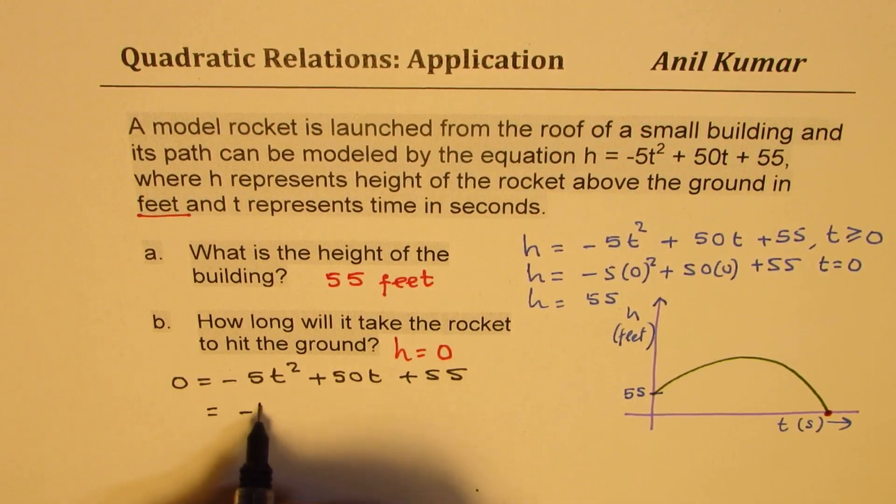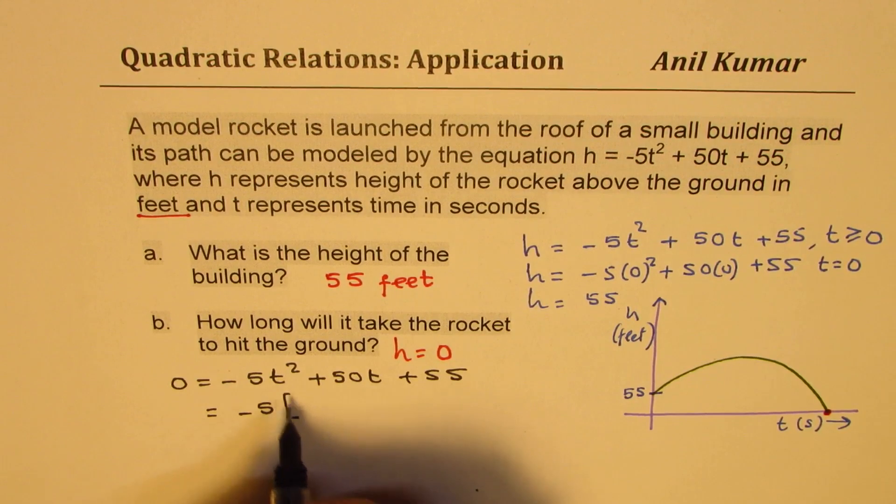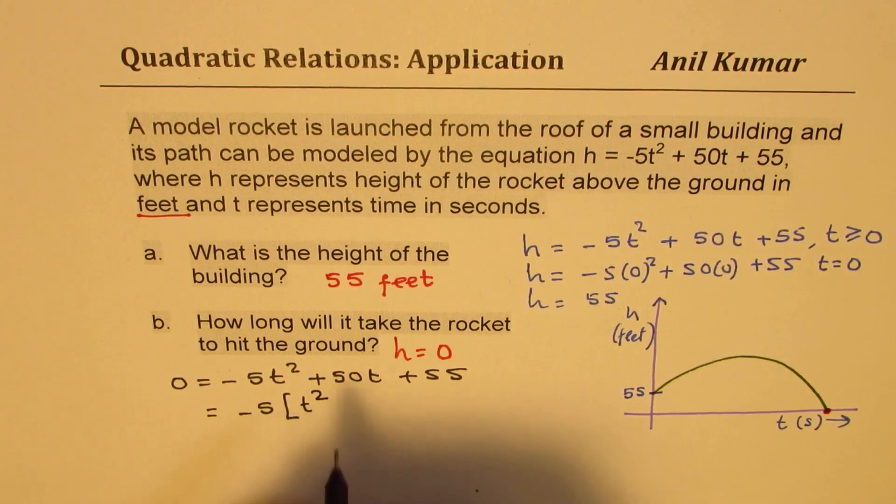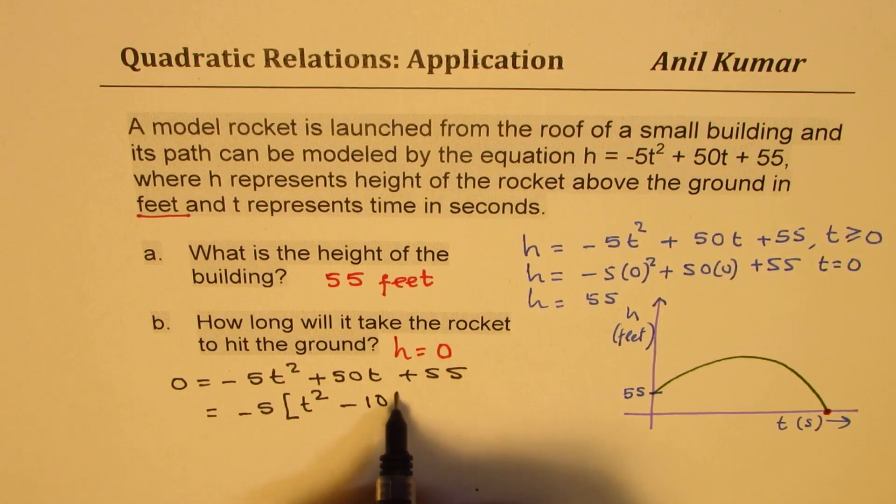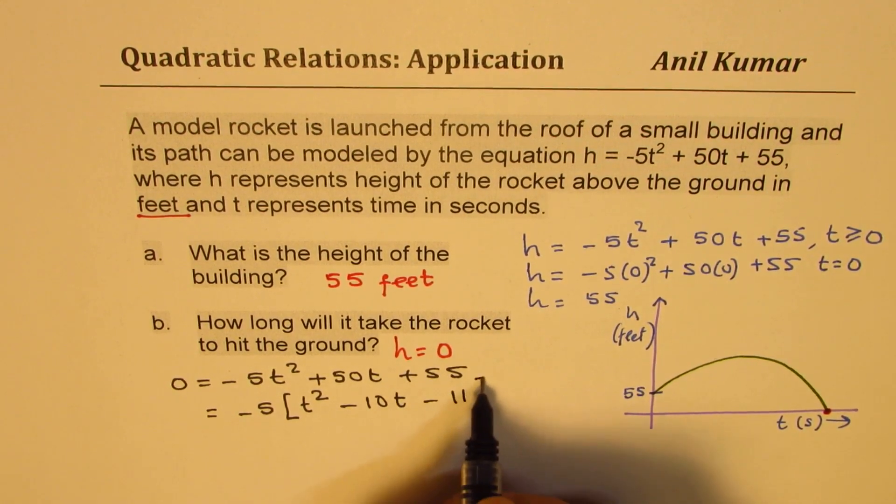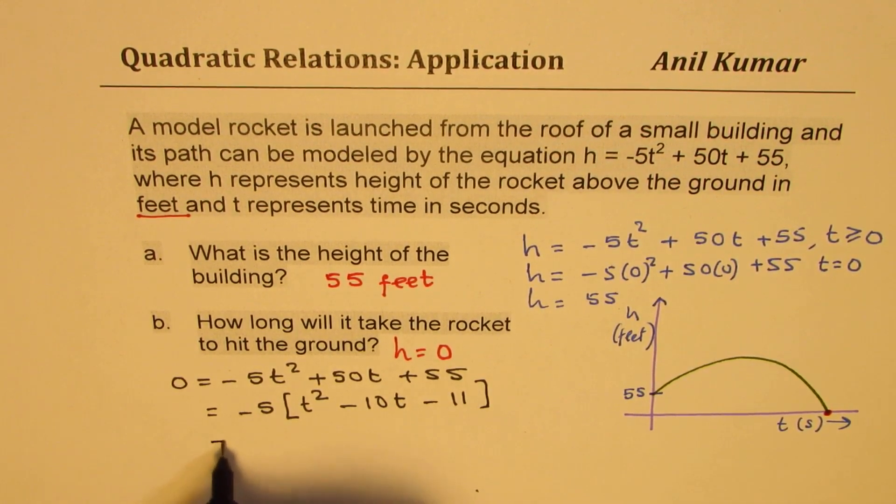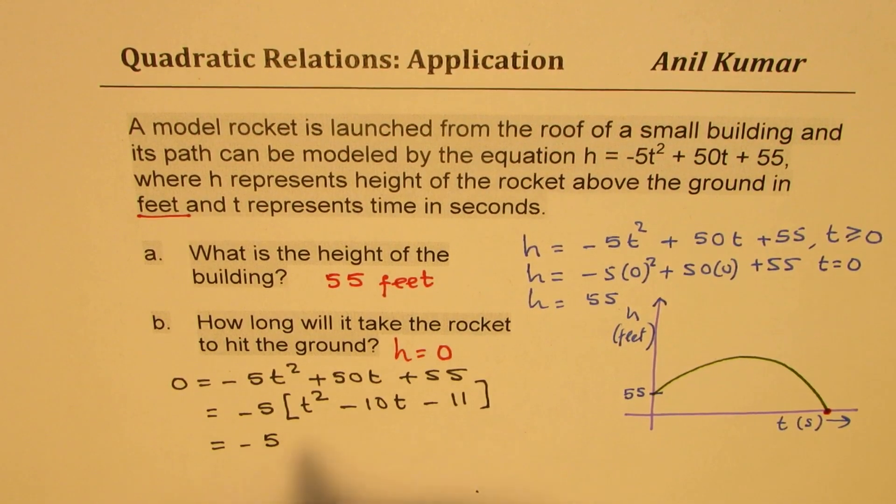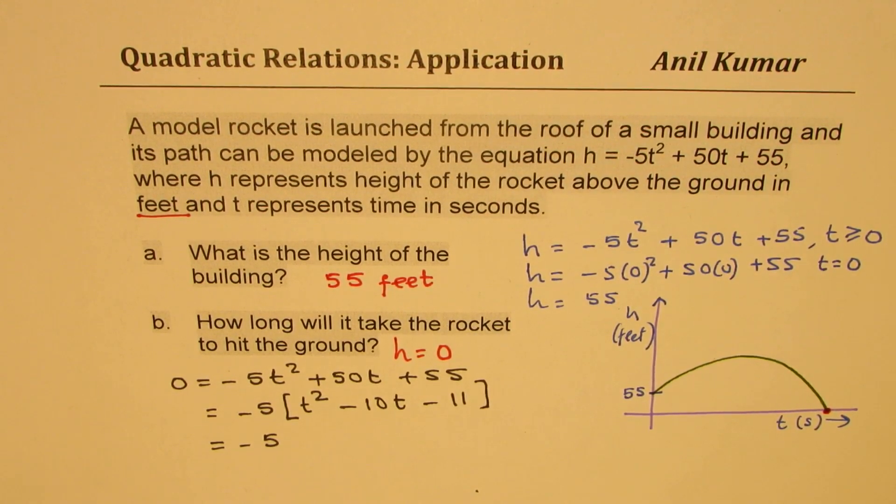We can take minus 5 common. We get T squared and here dividing by minus 5, we get minus 10T and we get minus 11. This can easily be factored. The idea is to practice factoring and this is a straightforward example based on the factoring techniques which you have learned. Let me get into those details.